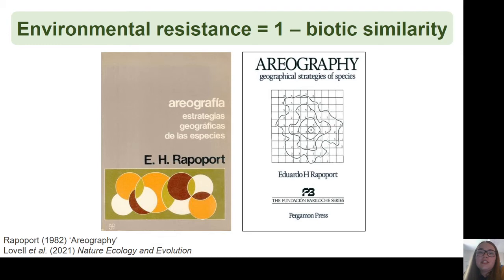The idea of using environmental resistance dates back to Eduardo Rappaport's book Areography, originally written in Spanish in 1975 and later translated into English. Rappaport suggested that we could take these patterns of environmental resistance and use them to predict how a newly introduced species would spread through the landscape. The idea is that if we know an alien has successfully established a population at a site, then the native species in that area could essentially tell us what is limiting ranges there — so if the conditions are stopping native species from spreading between areas, they may also be stopping aliens from spreading.